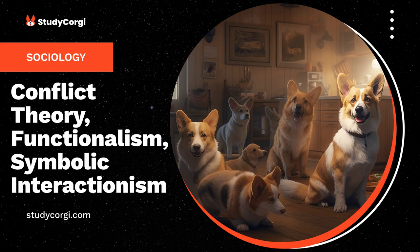According to Bream and Lee, functionalism pays greater attention to the systematic nature of interaction and the organization of different elements within the social structures of the organization. This is the main difference between functionalism and the other two paradigms of conflict theory and symbolic interaction theory. Functionalism can be used to make assumptions about an individual or human actor and society.